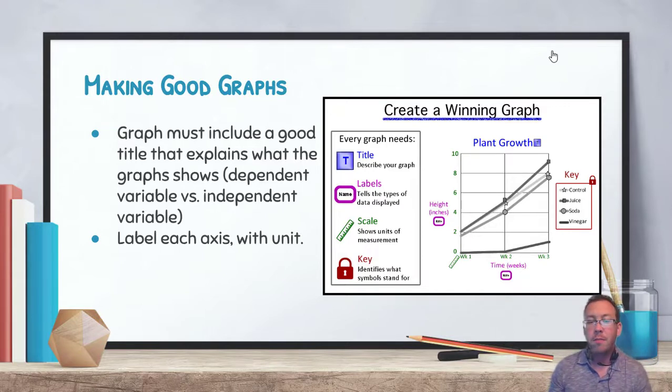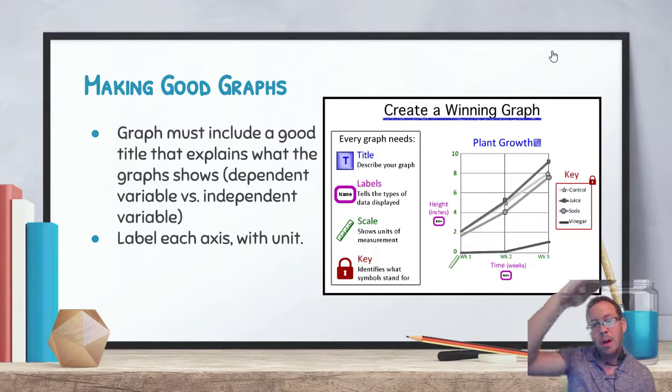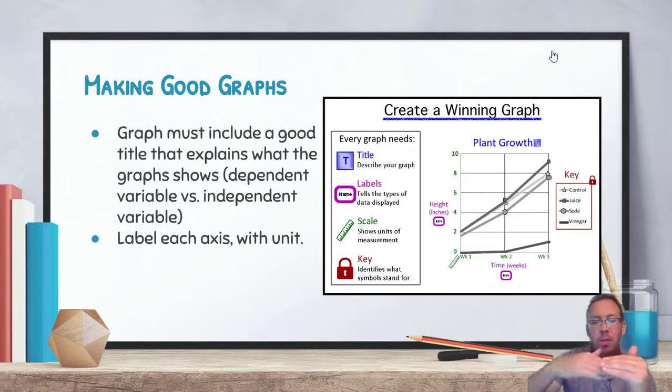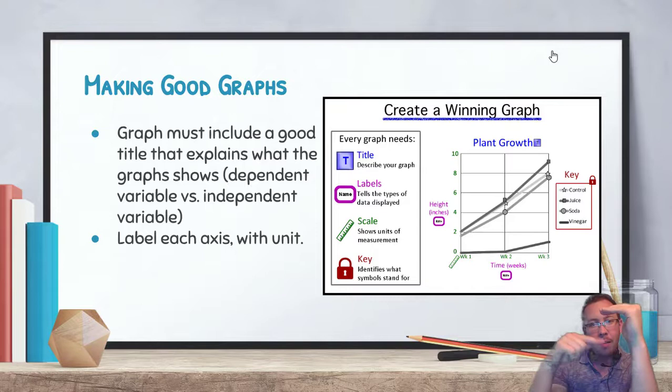A couple other things you may want to include are a key if some of the data is hard to read. So if you have multiple lines in a line graph, those lines need to be keyed so we know which line is which. We also need to be aware of the scale that we're using. The scale represents the number of increments that we go up each time we go up a line on the graph, so that depends on the data that you're looking at. If we're looking at numbers solely between 100 and 110, you don't want a graph that goes from 150 all the way down to 0. You want to scrunch that axis so that way you have individual data points that are a little bit easier to read.